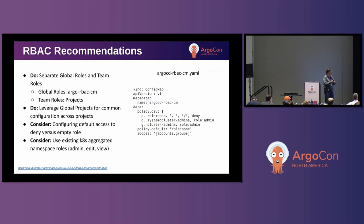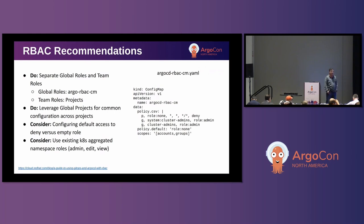I'm interested in getting feedback on configuring default access to deny versus an empty role. Typically in Argo CD, the default policy is set to an empty string — no role, you get nothing. It works, but it's not explicit in terms of intent, and auditors sometimes balk at that. I like setting up a deny-all role to be very explicit. Also, as mentioned earlier, if you give the default policy permissions, you can't take them away — but you can give it a deny role and add allow permissions, and that works fine.